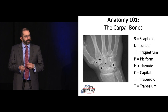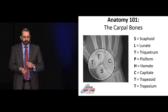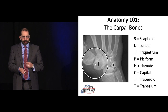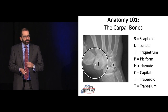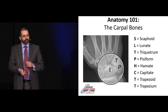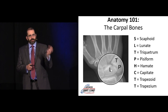Then we get to the other two T's, which always screws people up: the trapezoid and the trapezium. The way I remember them is: the trapezium articulates with the thumb, and the trapezoid sits above the index finger. Look at the endings — 'trapezium' ends like 'thumb' — and that'll help you keep those two straight.